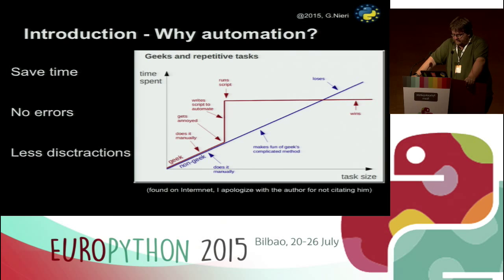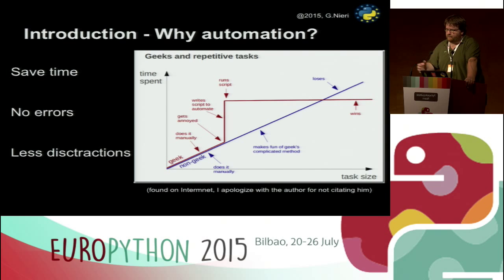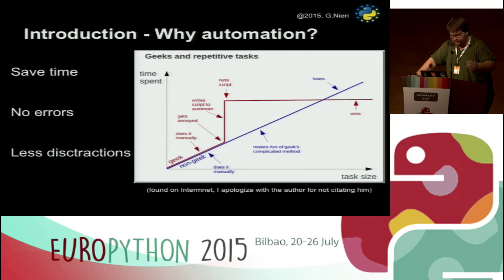The third benefit is that automating helps you remain focused on what you're doing. If you automate, for example, a procedure to retrieve information from the internet, you don't have to leave your IDE or main application to retrieve the information — you can just type a few strings and have the data back without leaving your main stream or your main process.